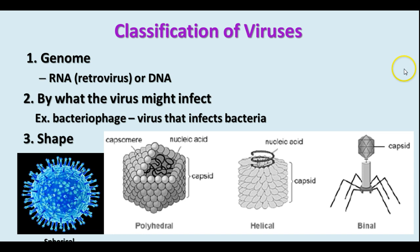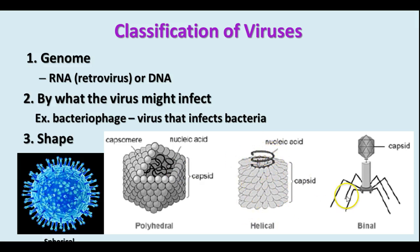So how do you classify viruses? First, we classify by genome — whether they're an RNA or DNA virus. RNA viruses are called retroviruses because 'retro' means backwards, and the RNA is backwards-transcribed into DNA inside the host cell. They are also classified by what the virus might infect and by shape: spherical, polyhedral like an icosahedron, helical, or complex combinations like the bacteriophage, which has a polyhedral capsid, a helical neck region, and tail pieces.